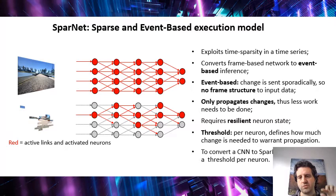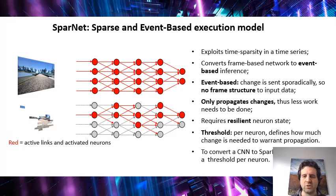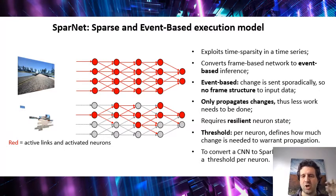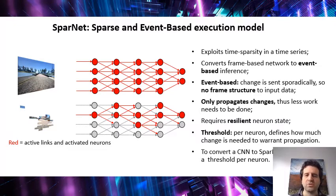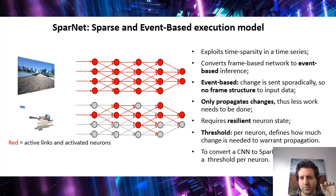And you have to provide one thing, which is a threshold — a minimum amount of change for each one of the neurons in the network that warrants the propagation of change. Because if you want to propagate all the change, you're going to get a lot of noise in the network and you're going to do a lot of processing, just processing noise. So you put a threshold that tells you how much change in one output warrants a propagation of the change.